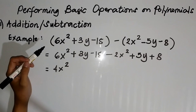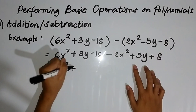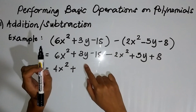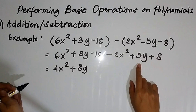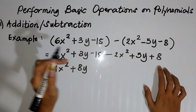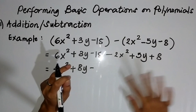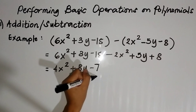Let's proceed to combining the second like terms. We have the variable y: we have 3y and 5y. Since both are positive, copy the positive sign and proceed to addition — just add the coefficients: 3 plus 5 equals 8, so we get 8y. Sunod naman ay negative 15 and positive 8. Let us just subtract 8 from 15 and copy the negative sign of 15 since it is the greater term: 15 minus 8 equals 7, so negative 7. That is our final answer.